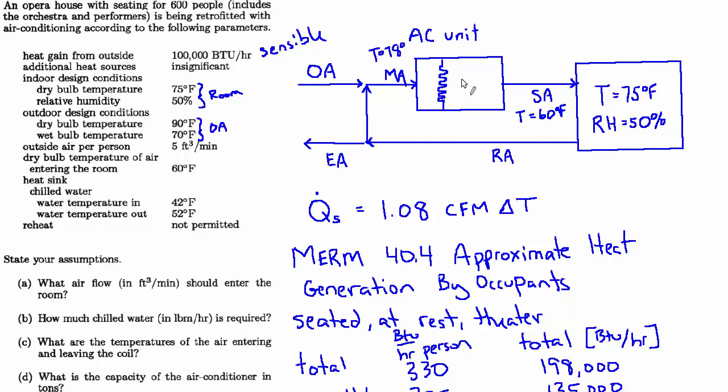So that might lead you to believe that the mixed air, which is coming in at 78 degrees, is being cooled to 60, and that's the whole story. And maybe that could be true, but I highly doubt it.